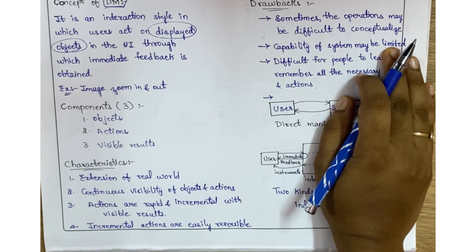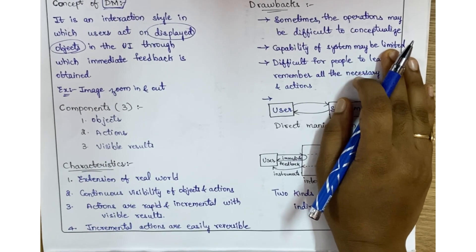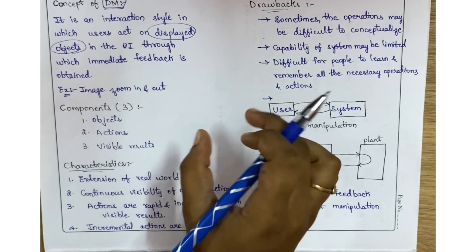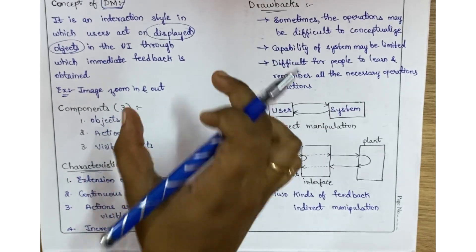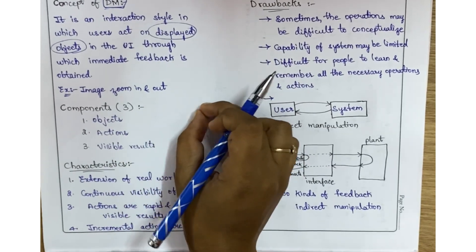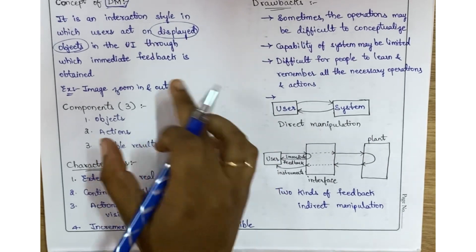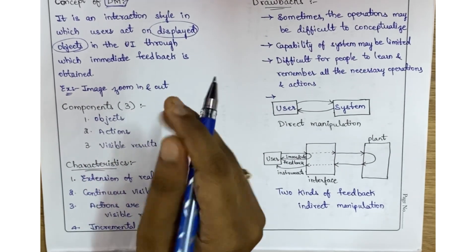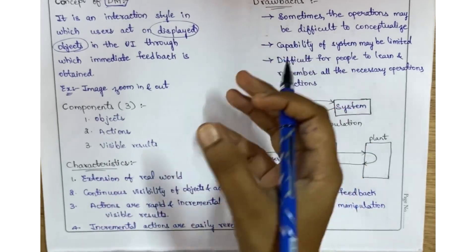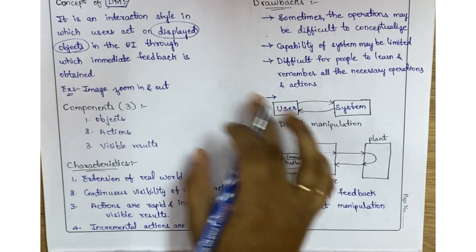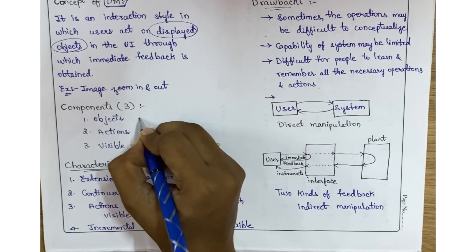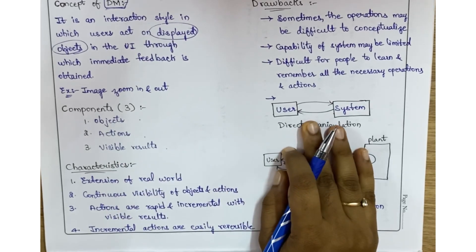For example, you can zoom in or zoom out an image. On the screen you can see an object, an image, and the action you are doing is zoom in or zoom out, and you can find the immediate results. This is direct manipulation - you are able to see the result immediately. The three components of direct manipulation are objects, actions, and visible results.